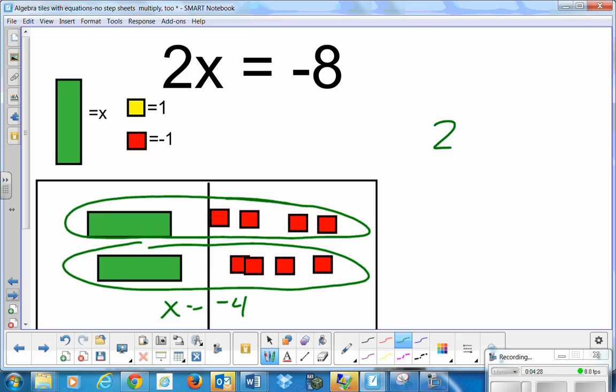Algebraically, that would look like this: 2x is equal to negative 8. I'm right now multiplying x times 2, and I don't want to know what 2x is. I want to know just what x is. So I'm going to isolate that variable. I'm going to divide by 2. If I divide my left by 2, I have to divide my right by 2. So x is equal to negative 8 divided by 2 is negative 4. That's my solution. Let's check it.